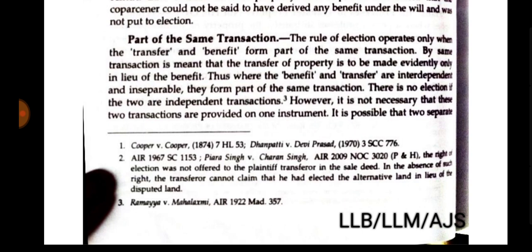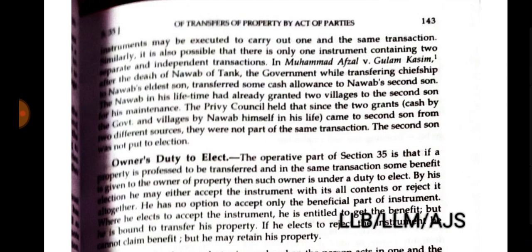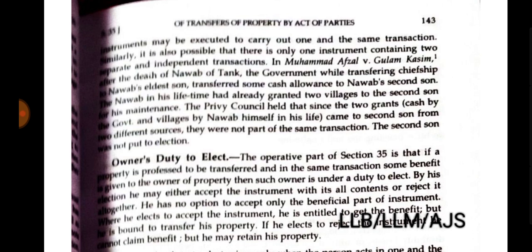The rule of election operates only when the transfer and the benefit form part of the same transaction. 'Same transaction' means that the transfer of properties is to be made evidently only in lieu of the benefit. Where the benefit and transfer are interdependent and inseparable — they cannot be separated because they form part of the same transaction — election applies. There is no election if the two are independent transactions. However, it is not necessary that the two transactions be in one instrument; two separate instruments may carry out one and the same transaction.